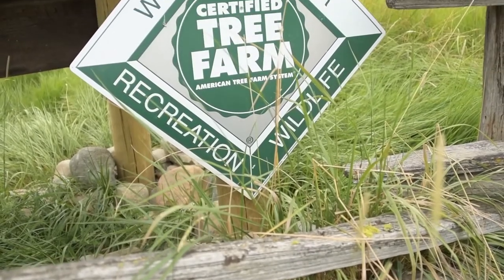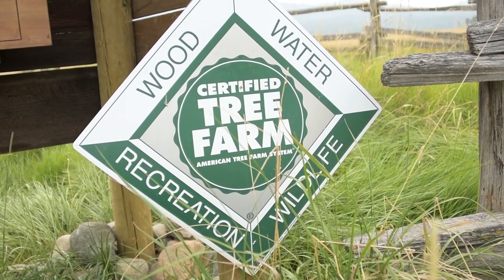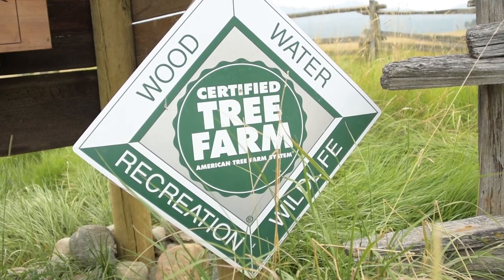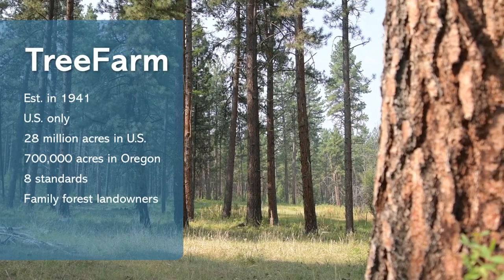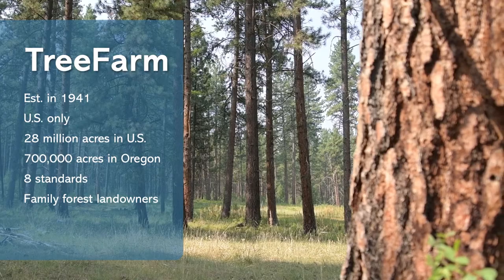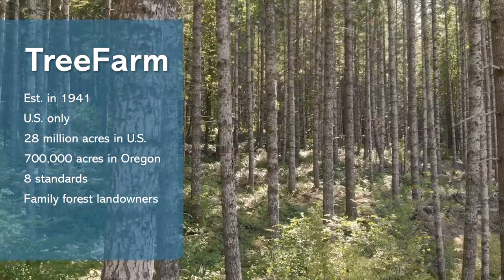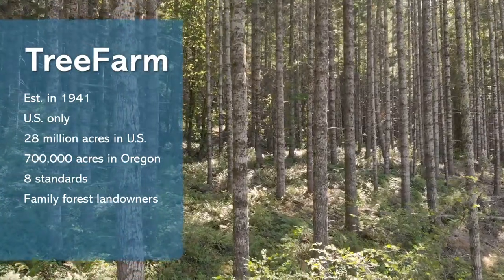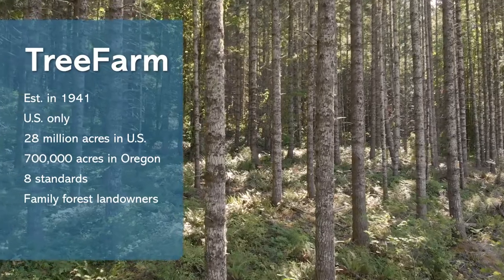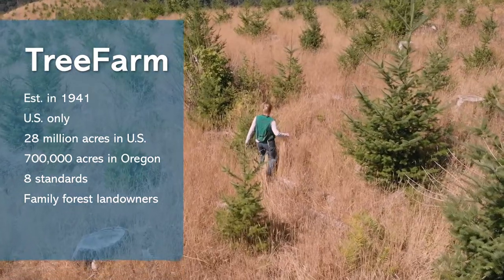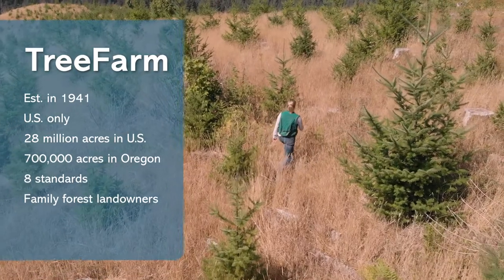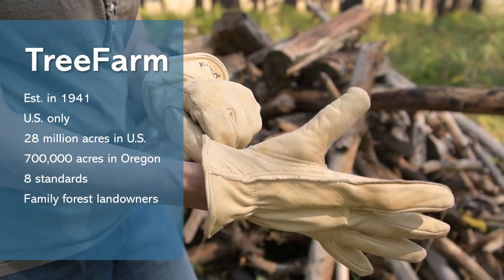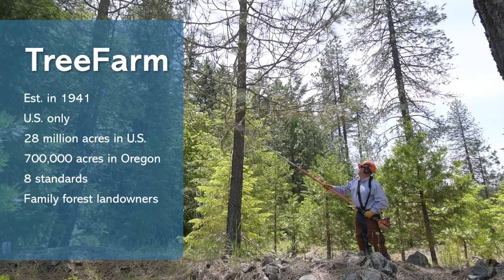The American Tree Farm System, or Tree Farm, was established in 1941 and has been recognized as a forest certification system since the mid-1990s. It currently certifies about 28 million acres in the U.S., including over 700,000 in Oregon. Tree Farm has eight Sustainable Forestry Standards that include performance measures used by volunteer tree farm inspectors to certify forest land. Limits on timber harvest unit size, forest retention, and use of forest chemicals are based on state-level regulations and best management practices. Tree Farm is geared toward family forest landowners.